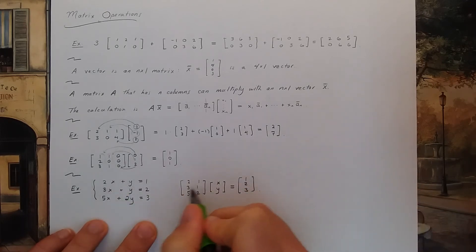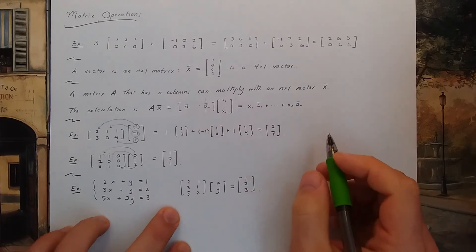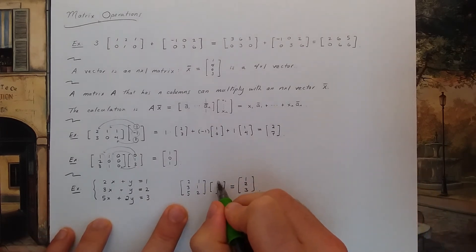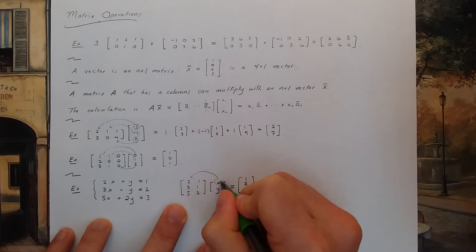These two systems are exactly the same. Why? When you do the matrix multiplication, you're going to do x times the first column plus y times the second column.